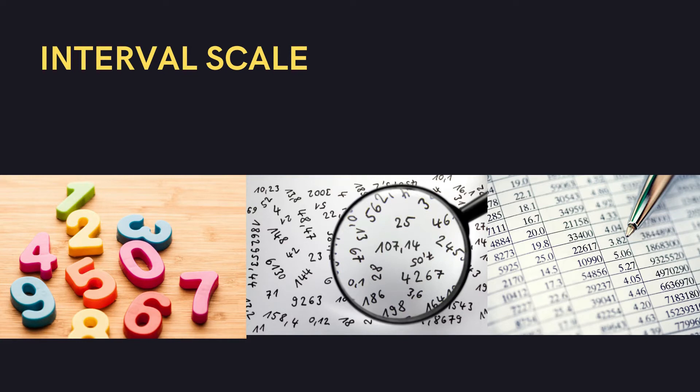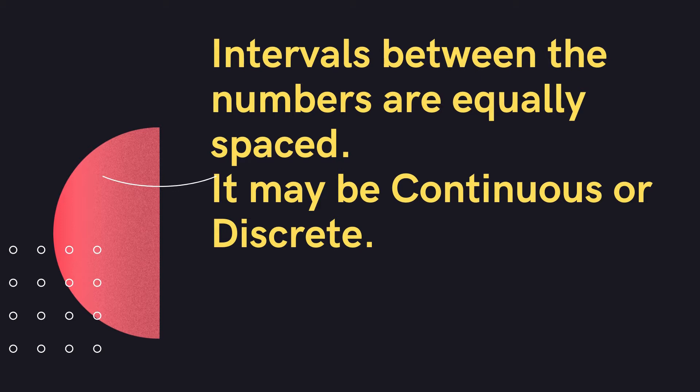When our variables are numbers — continuous or discrete — we are dealing with a scale level of measurement, also called the interval level. The interval scale is also known as the numerical scale. These are pure numbers and can be continuous or discrete, meaning they can be in decimals or whole numbers. The intervals between the numbers are equally spaced.